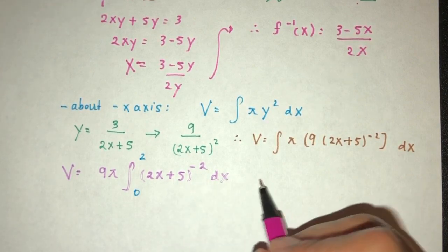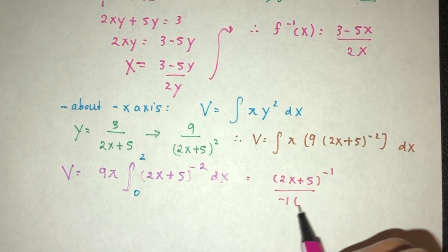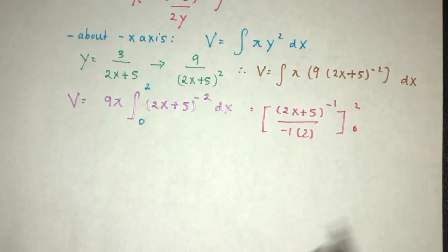So let's see what do we have here. First thing first, we have to increase the power by 1. That should be minus 1 divided by the power. Then divide by d by dx of this. That will be 2. And then here we have the limits of 2, 0. So let's find out.